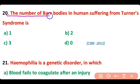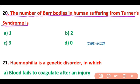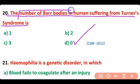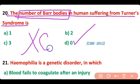Question number 19 and 20. Which is an example of sex-linked inheritance? So correct answer is option D. Color blindness is an example of sex-linked inheritance. Question number 20. The number of Barr bodies in humans suffering from Turner syndrome — correct answer is option D. Turner syndrome has genotype XO and the number of Barr bodies must be one less than the number of X chromosomes, so it is zero.